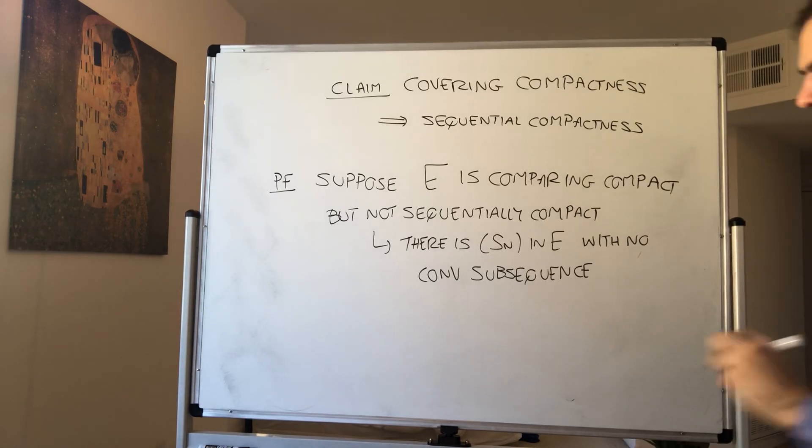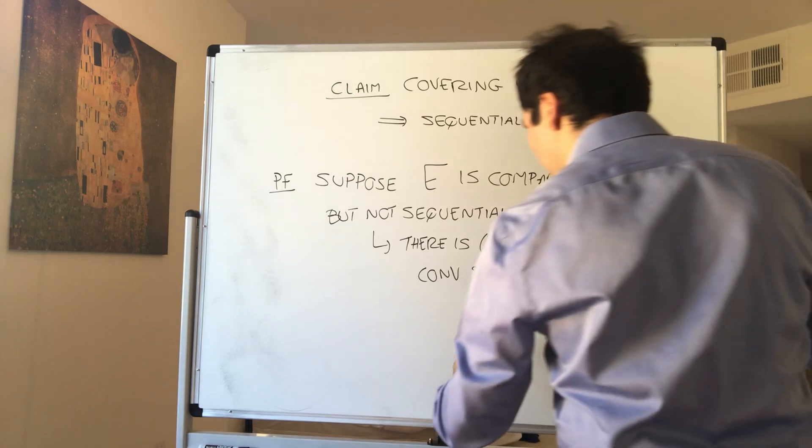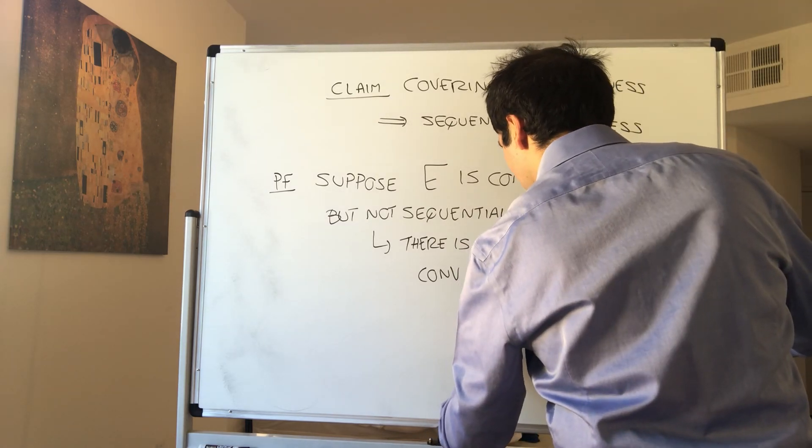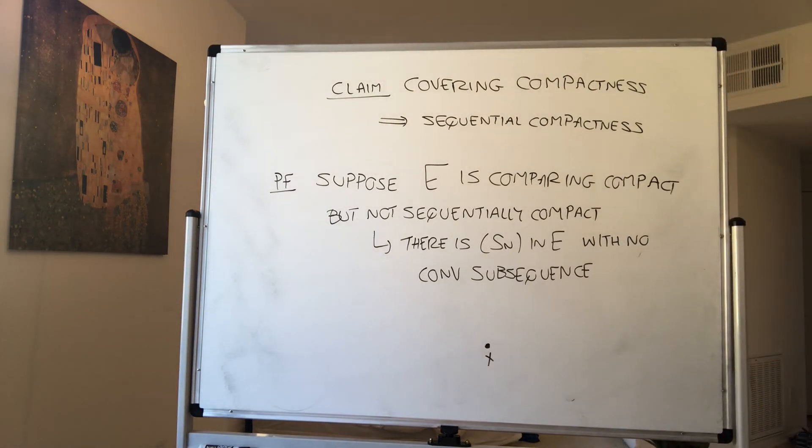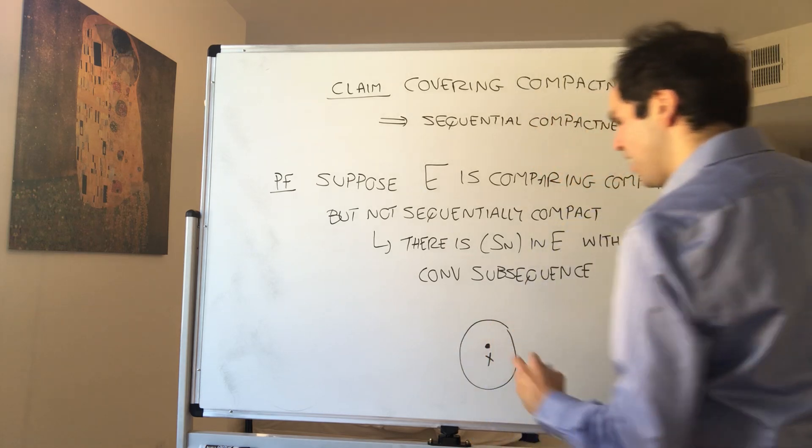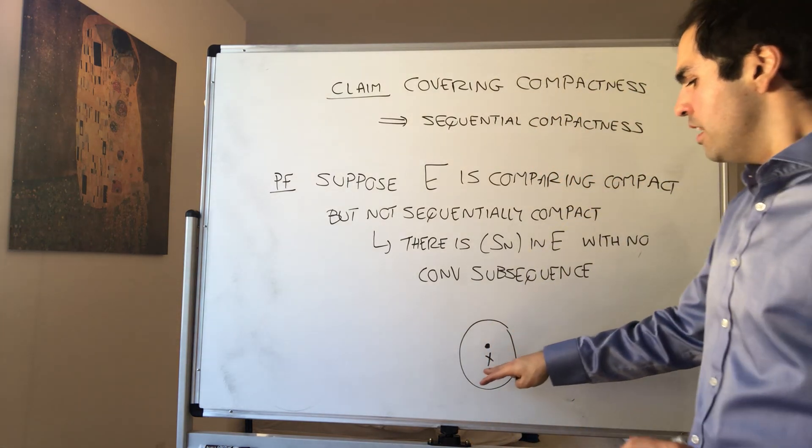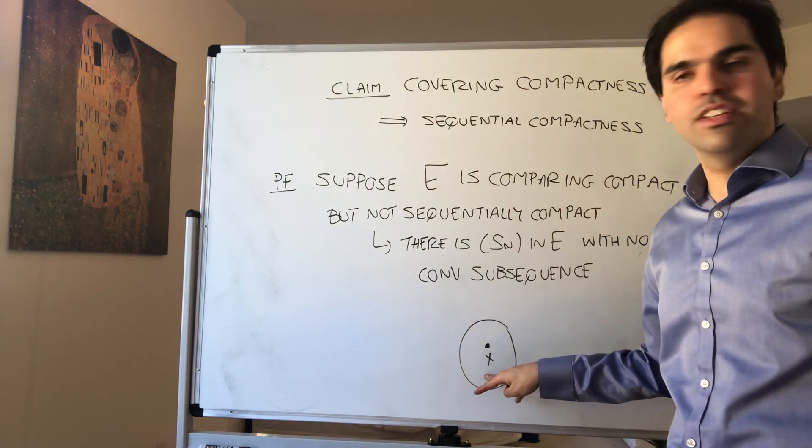And first thing I want to claim is the following. Suppose every point X has a neighborhood. So, here's what I want to claim.